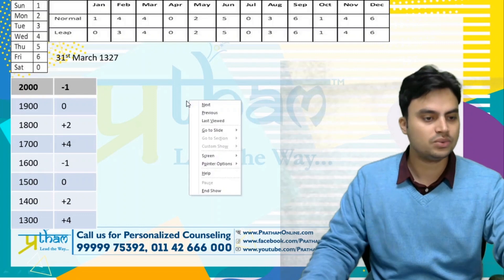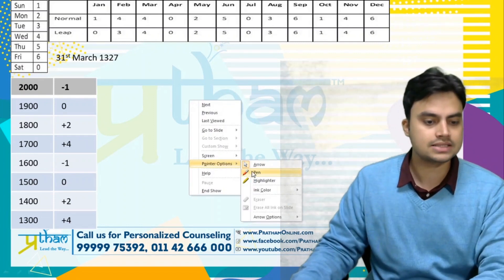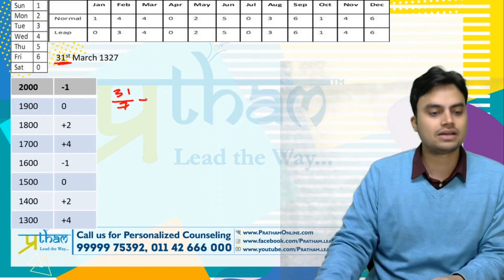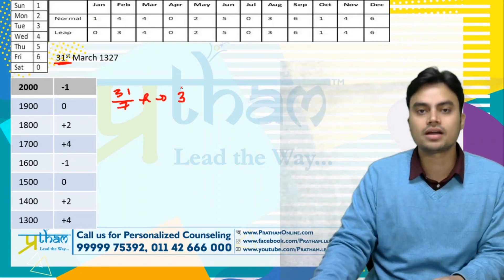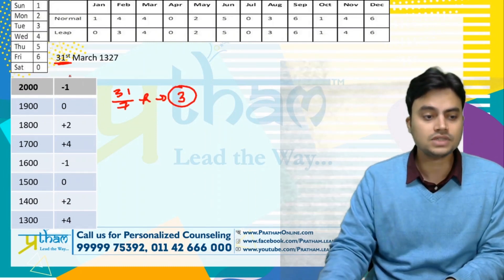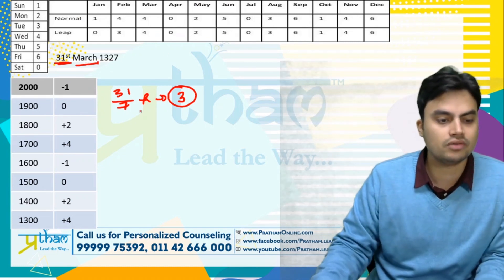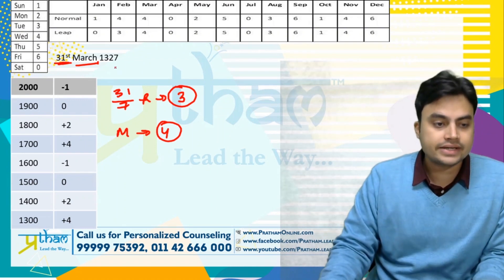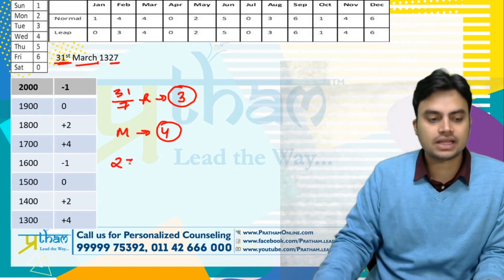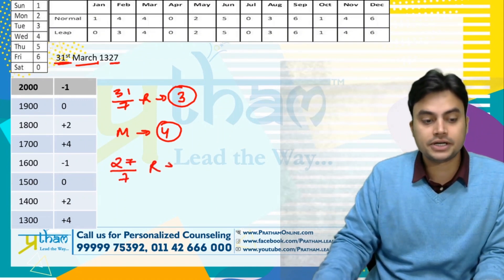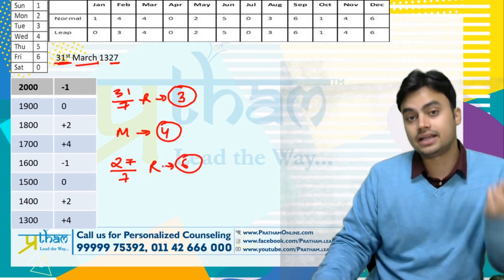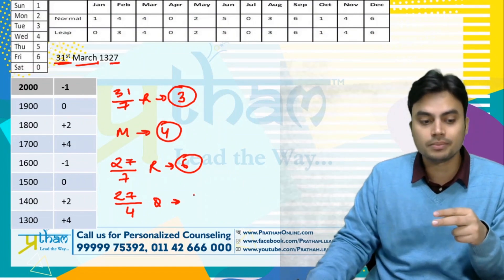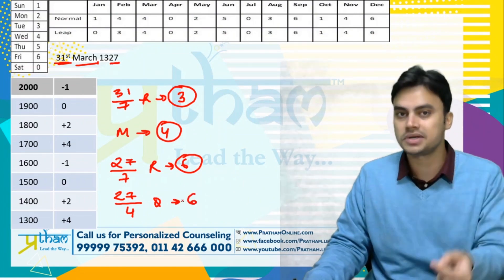Next question: 31st March 1327. 31 divided by 7 — remainder ho jayega 3. March ka code — leap hai ya nahi, koi fark nahi padta — March will always be 4. Toh March ka code ho gaya 4. Kaun sa year chal raha hai? 27. 27 divided by 7, remainder will be 6. Aur isi 27 ko 4 se divide karke quotient dhoondenge — quotient will be 6, kyunki 6 times 4 is 24.